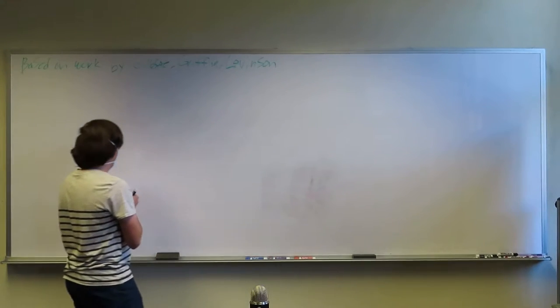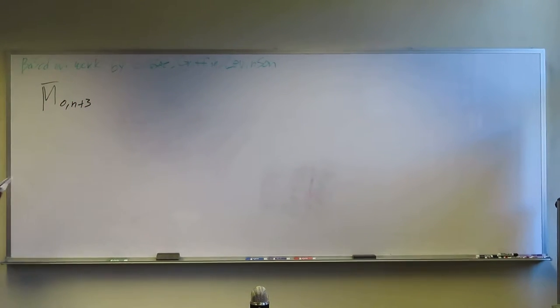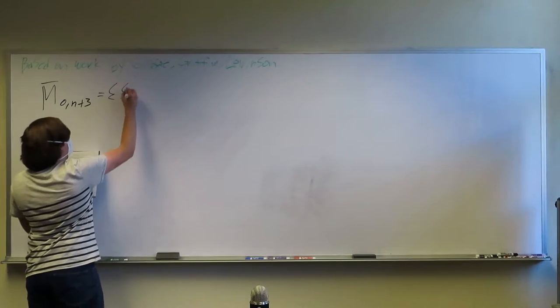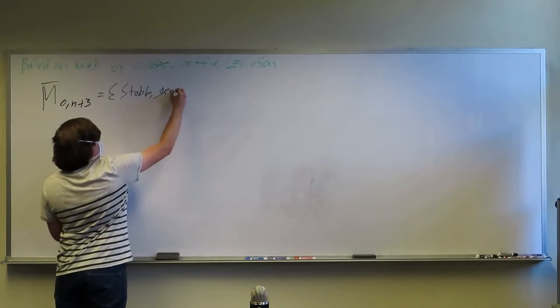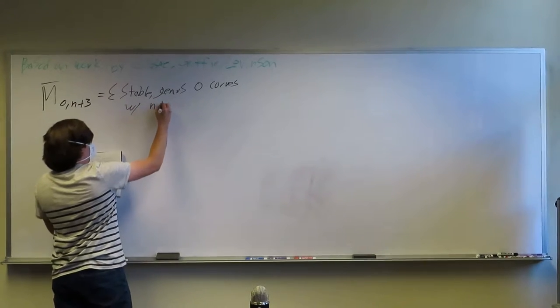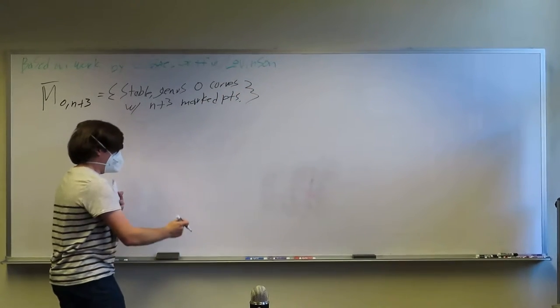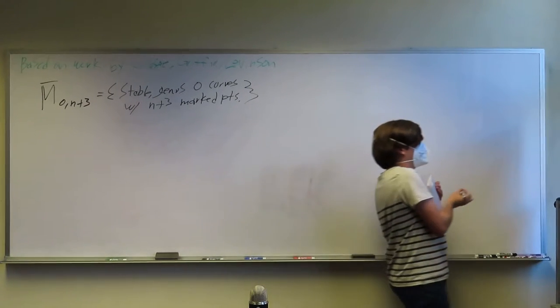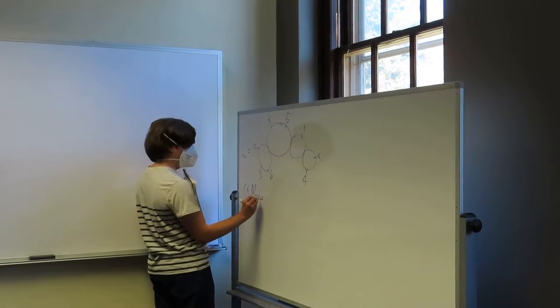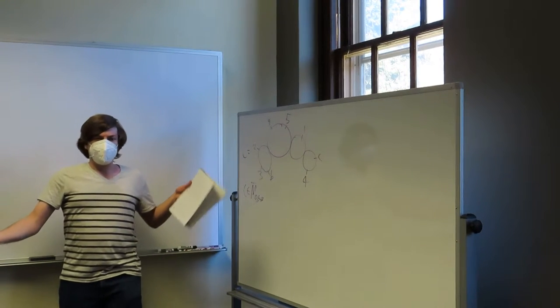Okay, so to start off with, we're going to be working over M0, n plus 3 bar, which is defined to be the set of stable genus zero curves with n plus 3 marked points. And so over here we have an example, which I'll call C. C here is an element of M0 just for specification, 5 plus 3 bar. So M0,8 bar, but three of the points we treat differently, so that's what we have with plus 3.